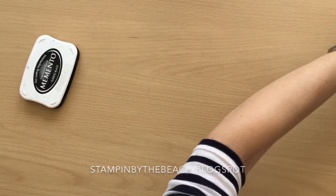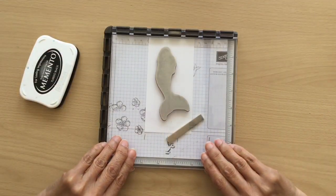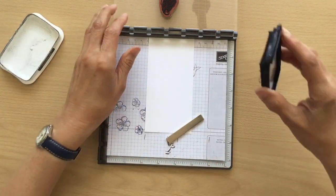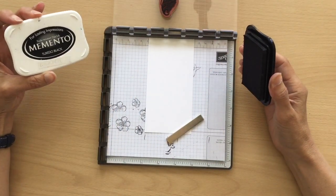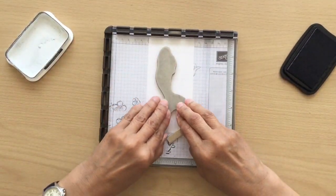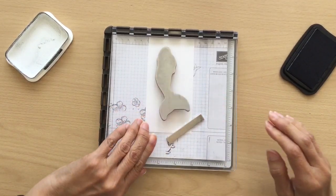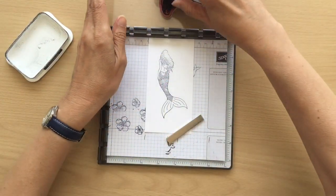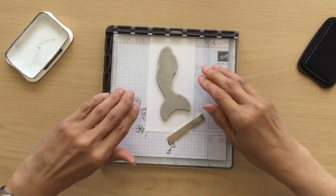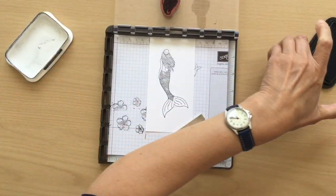Let's bring in my Stamper Radder. I have thick Whisper White, I've got my mermaid positioned. We're going to be fussy cutting her out afterwards, so as long as it's in your piece of paper. I'm using Memento Tuxedo Black. I'm just going to put that down.